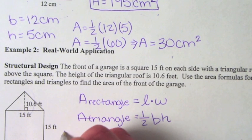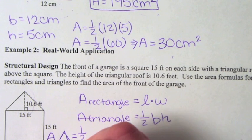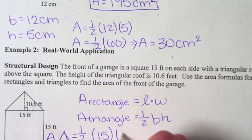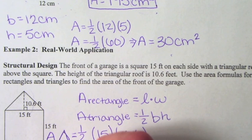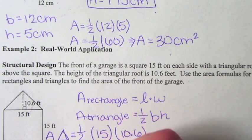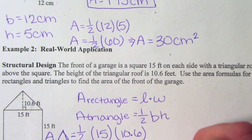Let's do our triangle first. The area of the triangle is going to be equal to 1/2. What is our base? Fifteen. And our height, which the problem tells us, is 10.6. Ten point six times 15 is 159, so this is going to be equal to 1/2 times 159. Divide that by two and the area of the triangle is equal to 79.5 square feet.